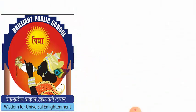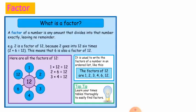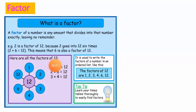First of all, let's understand what a factor is. A factor of a number is defined as a number that evenly divides a given number and does not leave any remainder. Now let's understand the term 'factor' more properly by taking the number twelve.